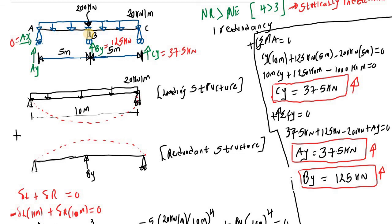If after adding up the reactions acting upward you get a value different from the load acting downward, your reactions are incorrect and need to be corrected — the beam will not balance. Always perform this check to verify your support reactions. This is how we use the method of superposition to calculate support reactions for a statically indeterminate beam.